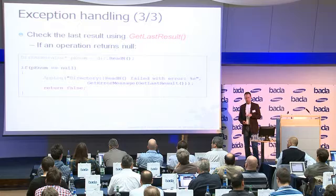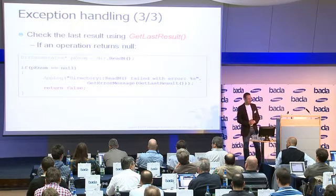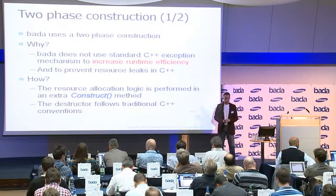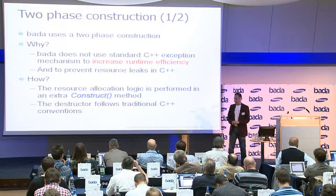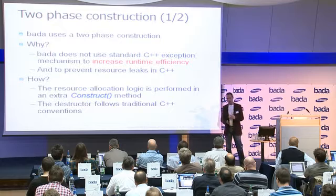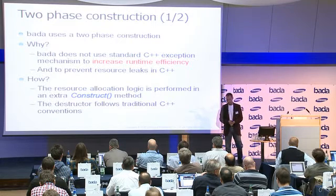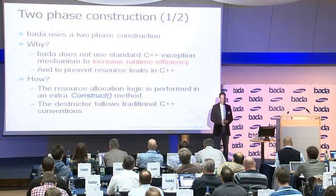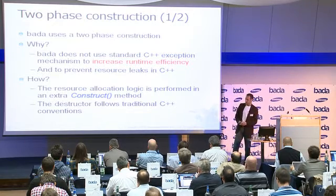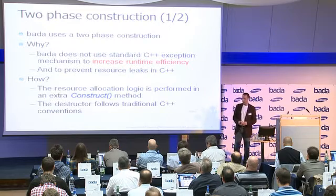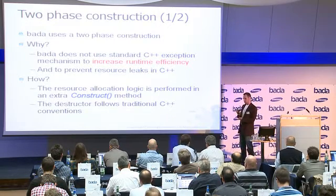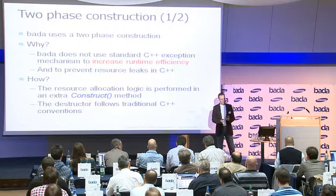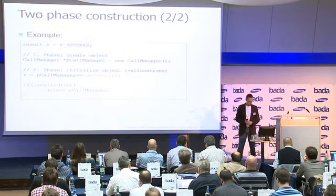That was exception handling in Bada. Strongly related to this is another concept we call two-phase construction. When constructing an object, you use a constructor, but since the constructor has no return value we cannot use our Bada mechanism to check if an exception happened. We also can't throw an exception within the constructor because we don't support standard C++ exception handling. So we structure the process of constructing an object into two phases: in the first phase we just create the object, and in the second phase we allocate the memory.